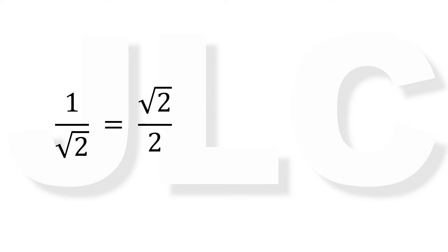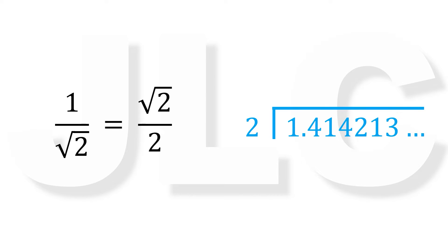So therefore, 1 over square root of 2 is equal to square root of 2 over 2. Now if we want to write square root of 2 over 2 into decimal notation, then we divide the non-terminating decimal 1.414213 by 2 using long division. Now obviously, this is easier to carry out than the previous example. So we see that it is more preferable to write 1 over square root of 2 as square root of 2 over 2, because it is easier to carry out long division when the divisor is a whole number.